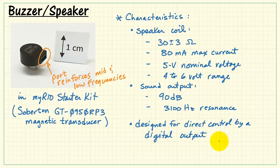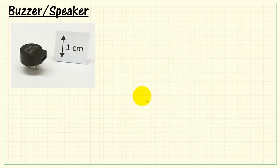Now the device requires 5 volts and it really is designed for direct control by a digital output. This is maybe a little bit different than a conventional speaker. Now let's see how we can interface this to MyRIO.